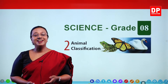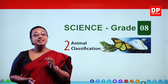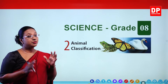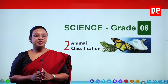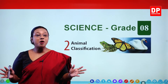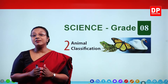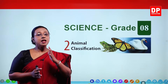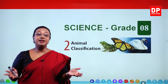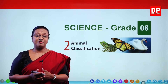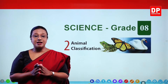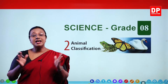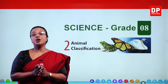Hello, dear students of grade 8. Today I am going to discuss the second lesson of your science textbook, that is animal classification. You already know about different organisms — microorganisms and the organisms we can see with our naked eye, the macro organisms. Under that, you are familiar with animals and plants. Now, if you look at your environment, there are so many different types of animals. That is called diversity — a diverse range of animals.